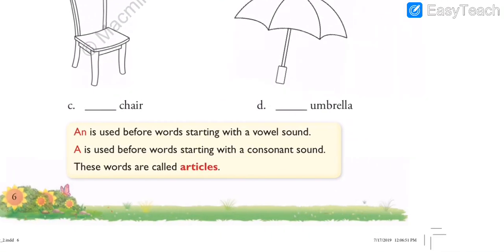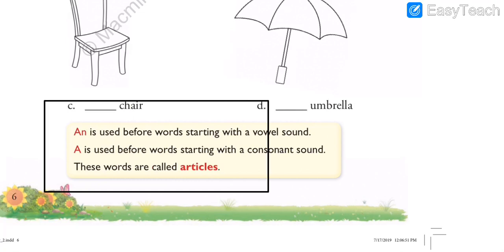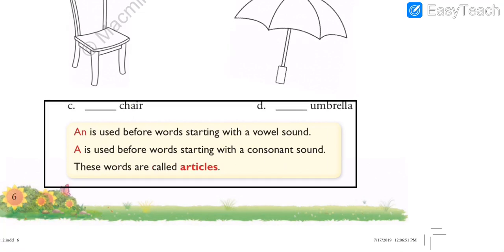And we also went through this definition. Let me repeat it once more: 'AN' is used before words starting with a vowel sound. 'A' is used before words starting with a consonant sound. These words — A, AN — are called articles. Both A and AN are articles.